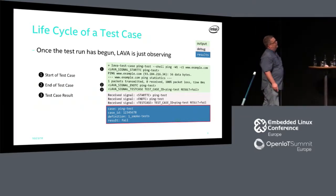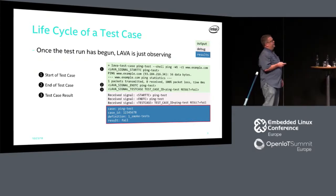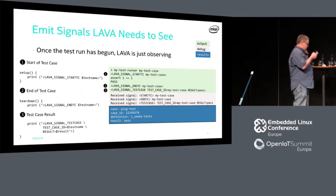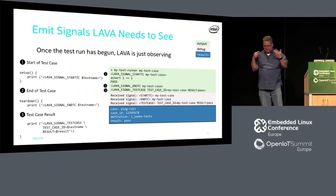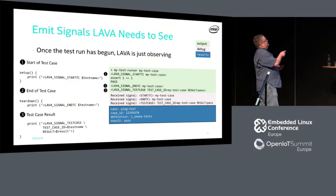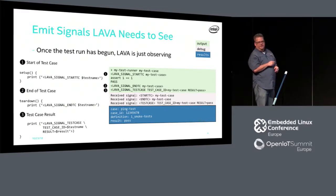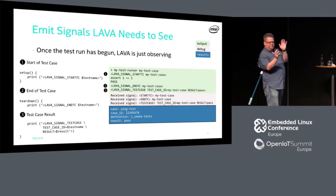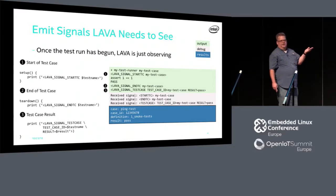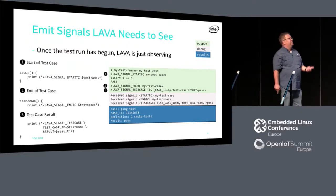At the very top you can see the 'lava test case ping test' — that's using a special incantation for Lava, which is where we're trying to get away from. This was my aha moment — when I realized this is what Lava is looking for, why don't I just make my test runner emit this stuff? I've got pseudocode that's sort of Python-ish. Why don't I just print out 'lava signal start TC', do my test, then emit the end signal? The result is going to be exactly the same, because that stuff goes to standard out and Lava is just observing standard out — it doesn't know whether the lava test case script wrote it or whether your runner ran it.